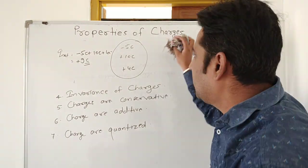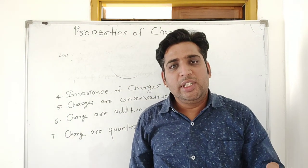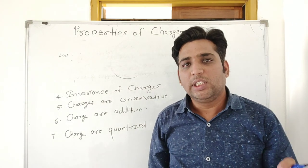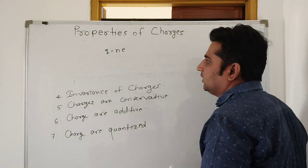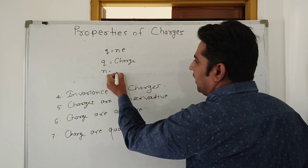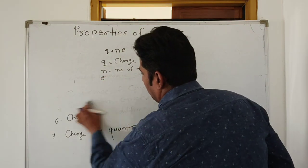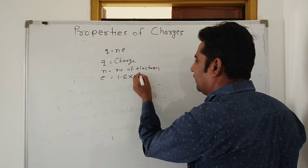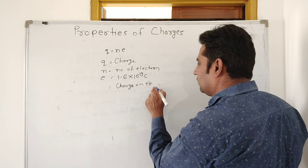Next, charges are quantized. All physical quantities exist in discrete packets. Charge is an integral multiple of e, where e is the charge on an electron. The formula for quantization of charge is Q = Ne, where N is the number of electrons and e equals 1.6 × 10⁻¹⁹ coulombs.